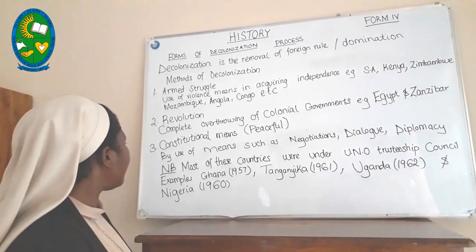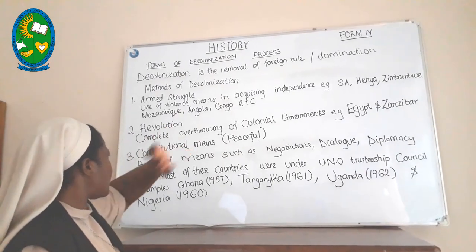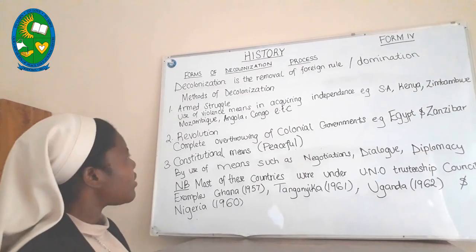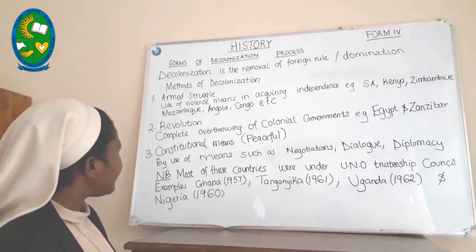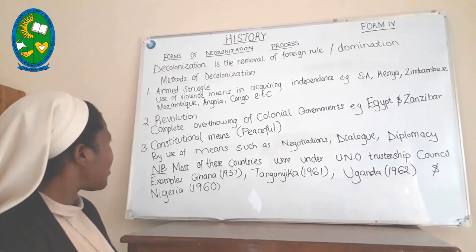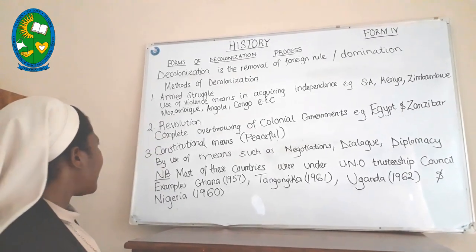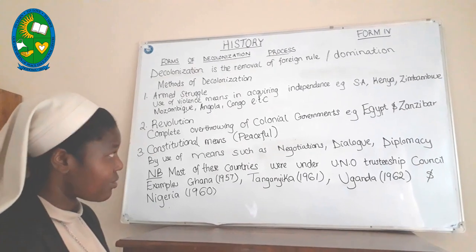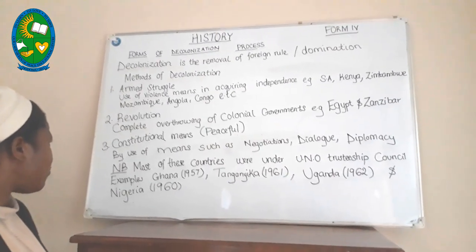The second form of decolonization used in African countries is decolonization through revolution. Revolution refers to the complete overthrowing of colonial governments. Some African colonies, because of the violent treatment given by the colonial government, decided to completely overthrow the colonial government in power. Examples include Egypt and Zanzibar, both of which used revolution as a means of decolonization.